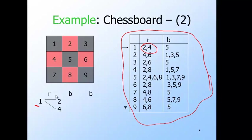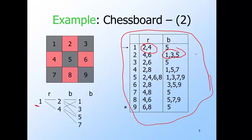Now we're in states two and four, and B comes in. From state two, we can go to one, three, or five — you can figure that out by noticing those are the adjacent black squares, or by looking at row two of the table: the black moves are one, three, and five. From state four on a black move, you can go to one, five, or seven. Some of those states were already listed, but between two and four, the states you can get to are one, three, five, and seven.